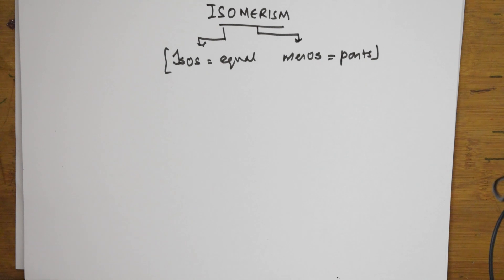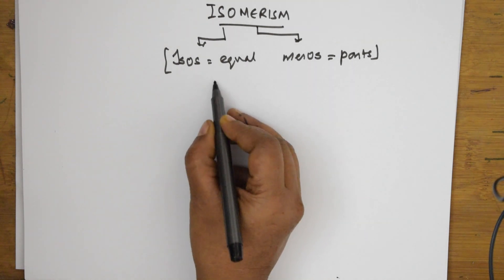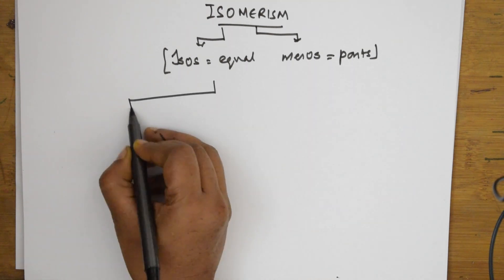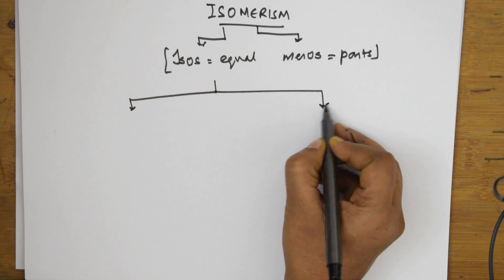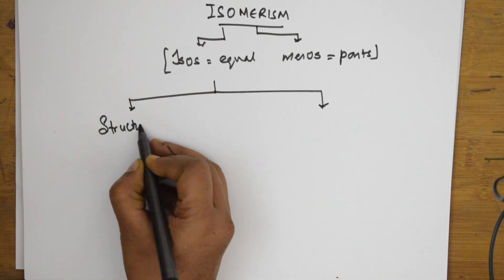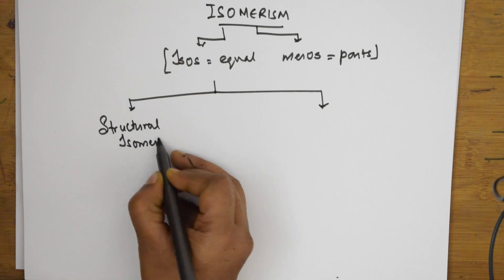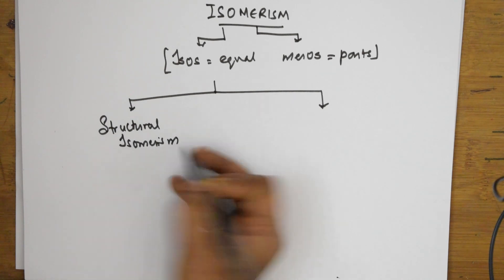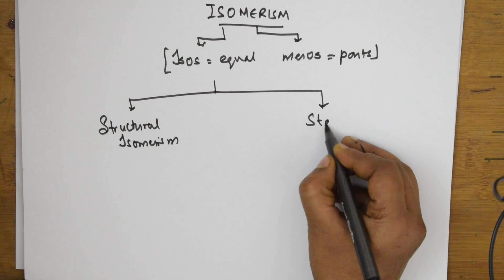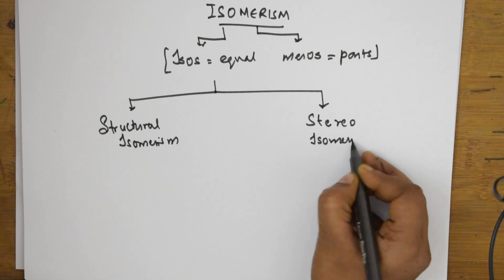In isomerism, there is a particular classification. First we will learn that and then come back to the examples. Isomerism is basically studied under two headings: one is structural isomerism and the other is stereo isomerism.